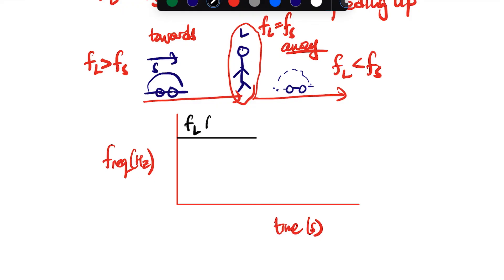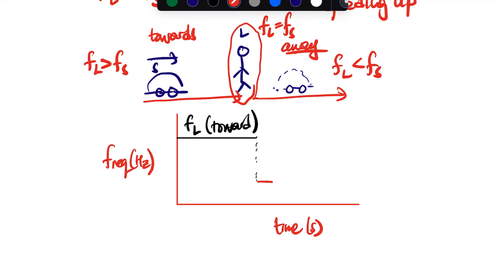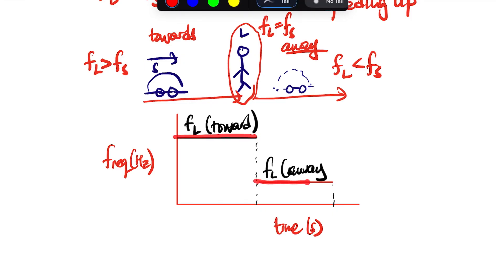On the graph, the upper line represents the high frequency of the listener while the source is moving towards, and then there is a transition where the frequency decreases as the source passes. The lower line shows the frequency of the listener while the source is moving away, which is less than the frequency of the source. So always: the line above is the high frequency when moving towards, and the line below is the low frequency when moving away.